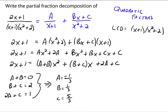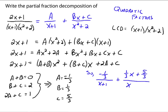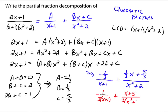Plugging those in, the decomposition is negative one-third over x plus one, plus one-third x plus five-thirds, all over x squared plus two. To clean up the complex fractions, multiply top and bottom by three, giving: negative one over three times x plus one, plus x plus five over three times x squared plus two. That is your partial fraction decomposition.